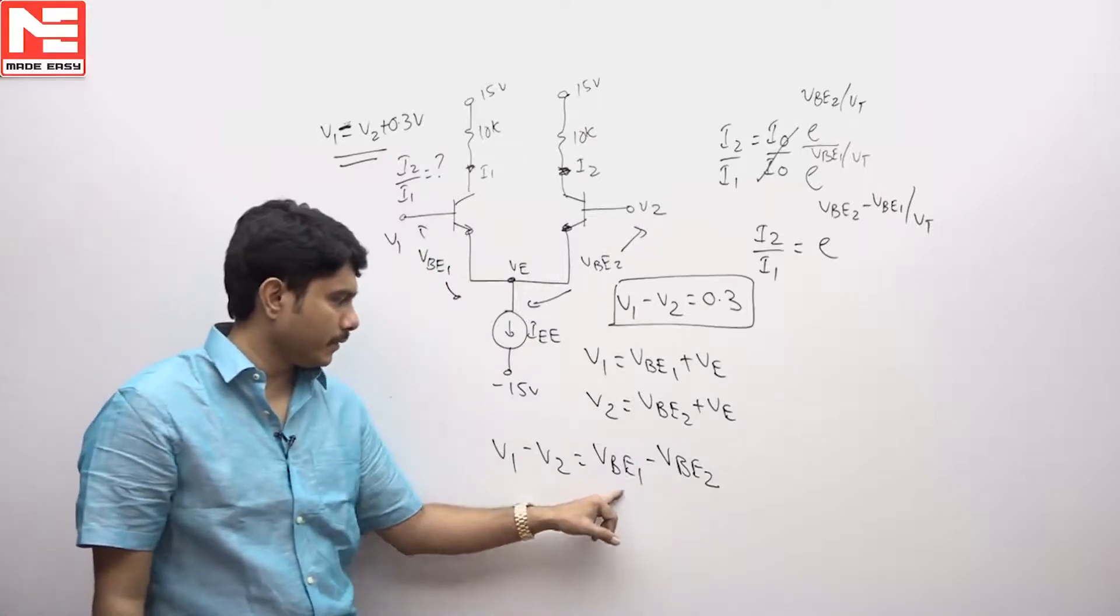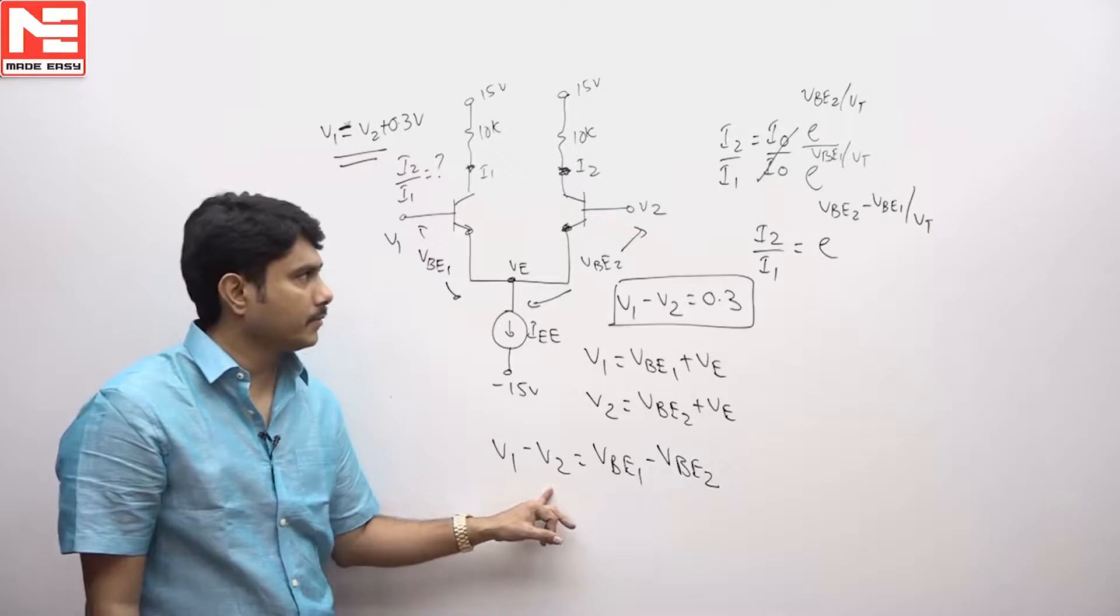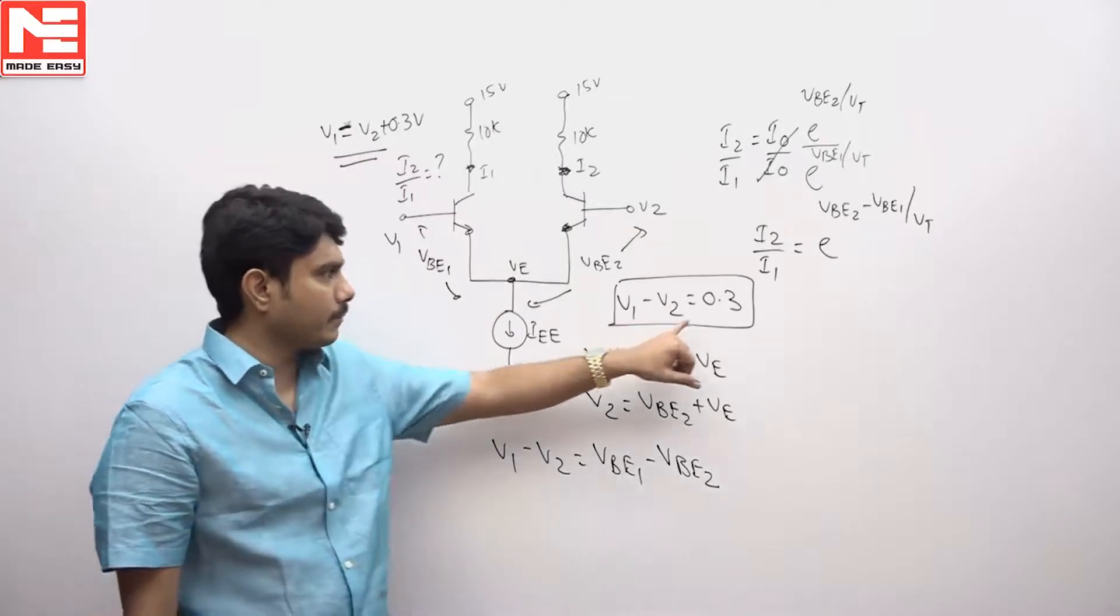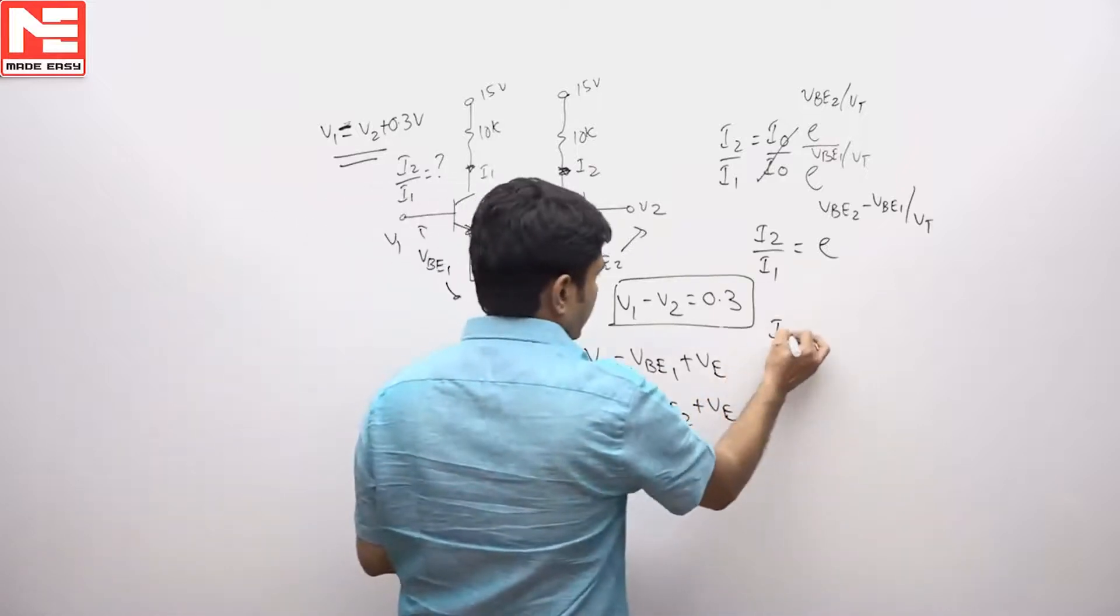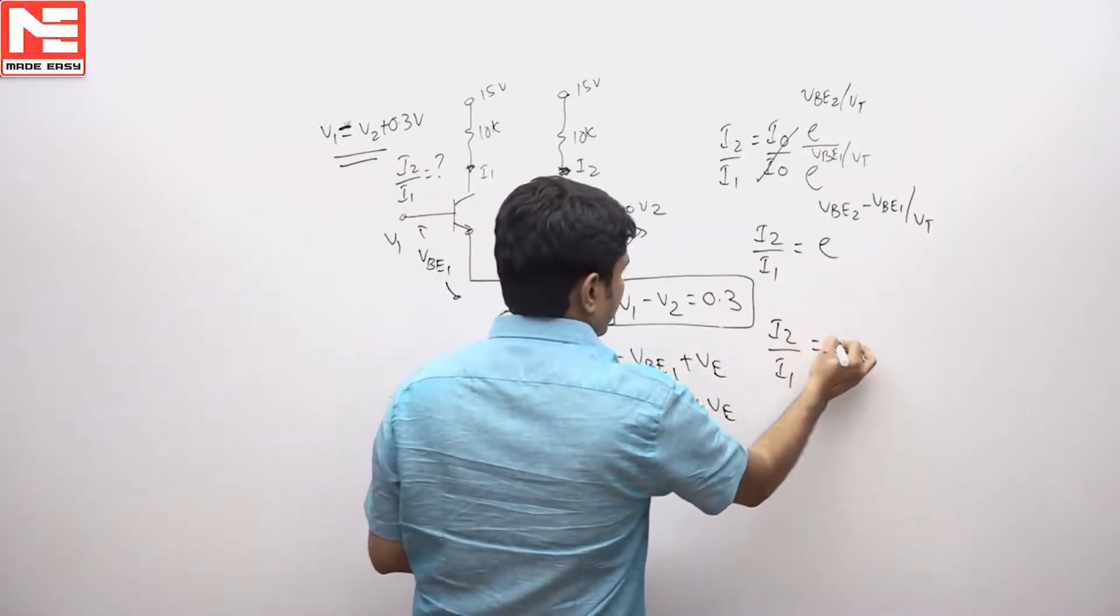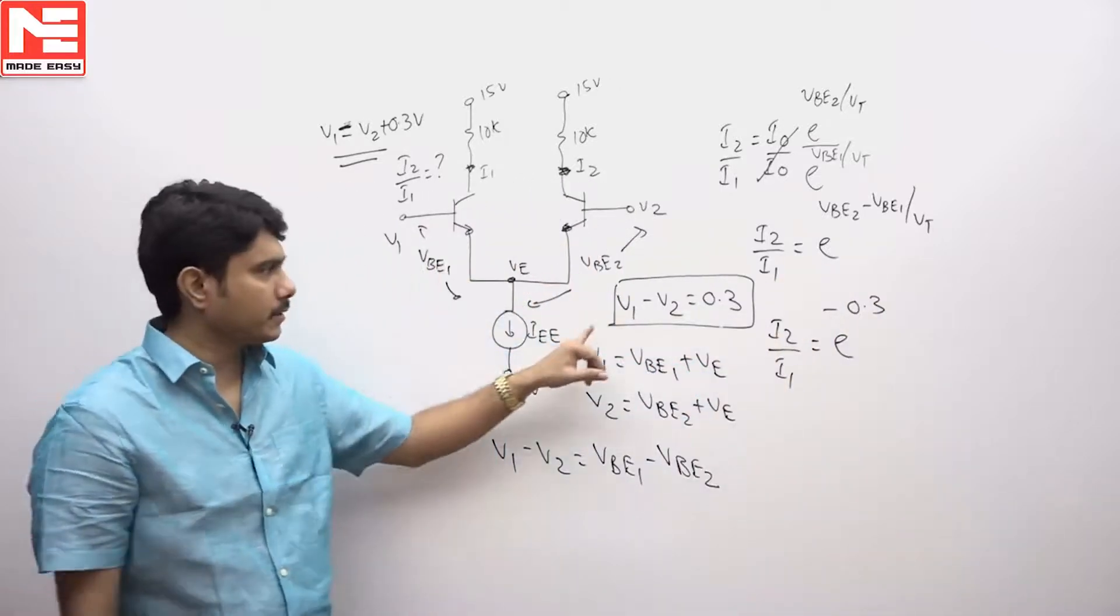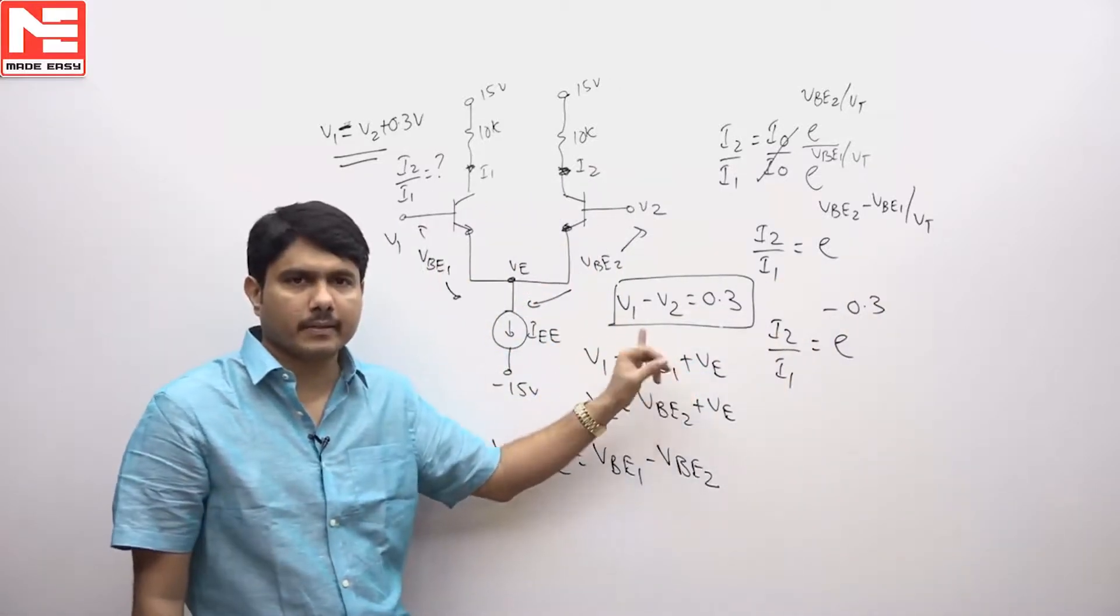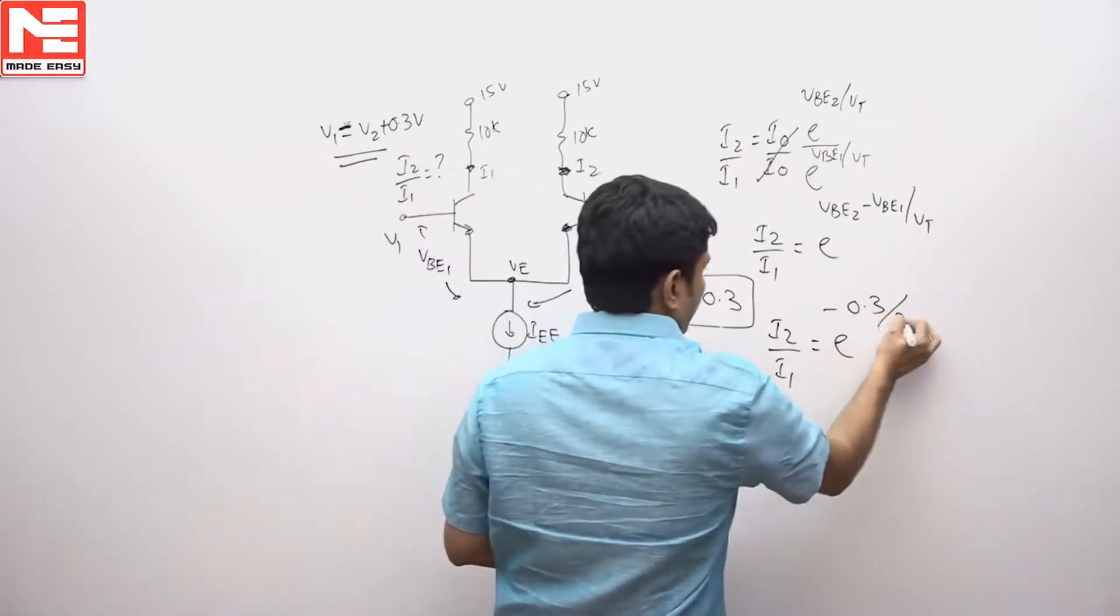So VB2 minus VB1 equals the reverse answer, negative value. That means the answer given in the problem is 0.3. So in place of writing 0.3, we will take I2 by I1 equals E power minus 0.3. Actually in the equation it is V1 minus V2, we are taking V2 minus V1, so minus 0.3 divided by 25 millivolts.